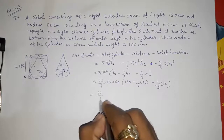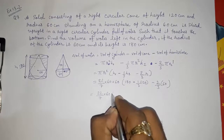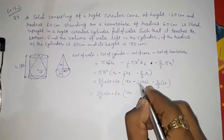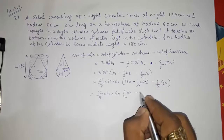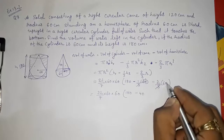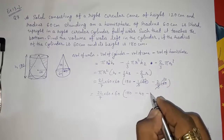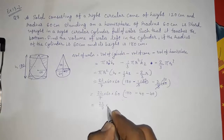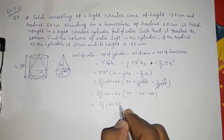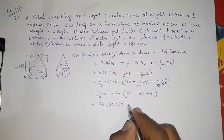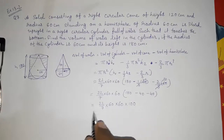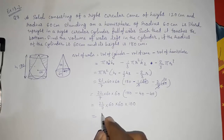So we have (22/7) × 60 × 60 × [180 − (1/3 × 120) − (2/3 × 60)]. That gives us 180 − 40 − 40, which equals 100. Wait, let me recalculate: 180 − 40 − 40 = 100. So we get (22/7) × 60 × 60 × 100, and then we divide by 7.